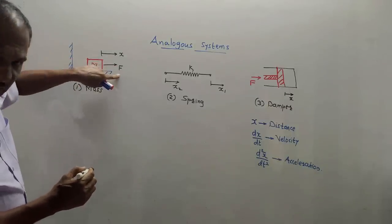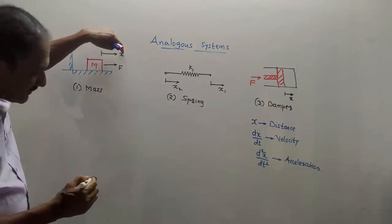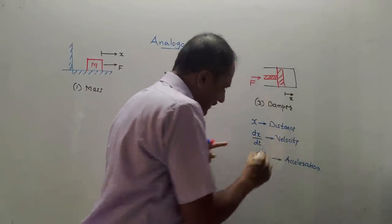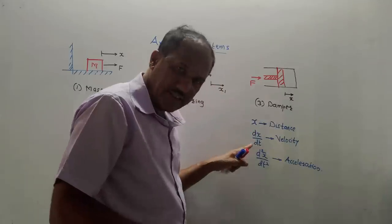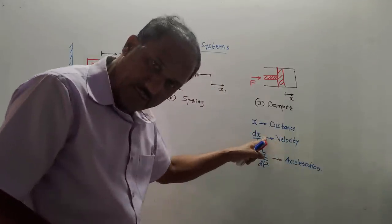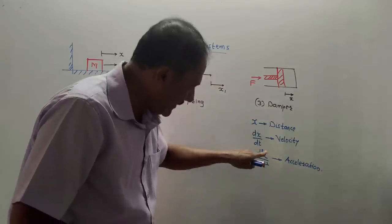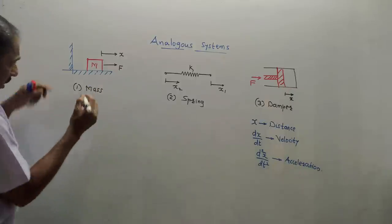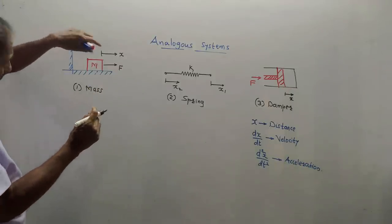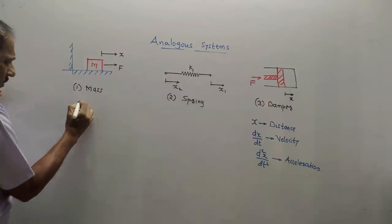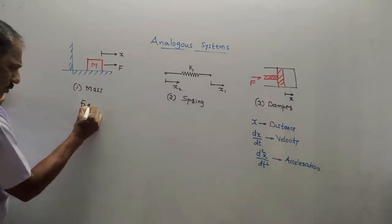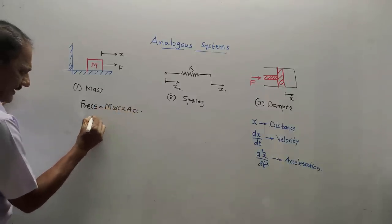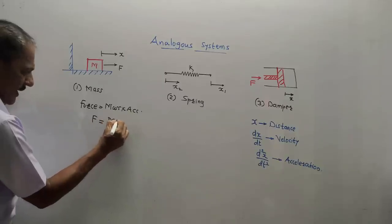After applying the force F, it causes a displacement X. Do remember: X stands for distance, the derivative of distance is velocity — dx/dt is velocity — and the double derivative of distance, d²X/dt², represents acceleration. This is the diagram for mass. As mentioned, if you apply force, motion of the mass takes place. The basic formula is: force equals mass into acceleration, F = M × A.